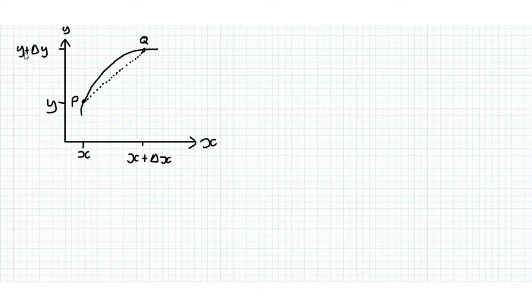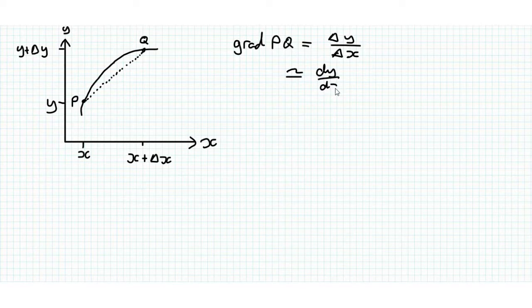And the same for delta y. The gradient of the chord PQ is equal to delta y over delta x. That is approximately equal to dy by dx. As delta x gets smaller, this point Q moves along this line.